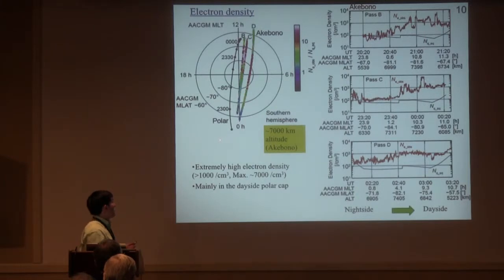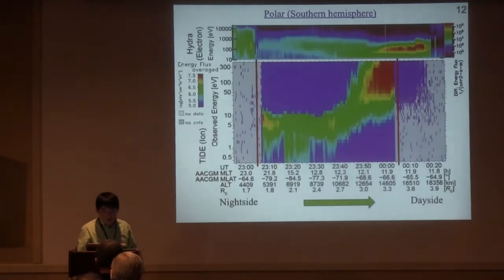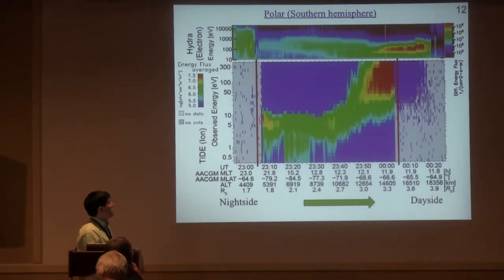At the same time, the Polar satellite crossed the polar cap near the Akebon satellite path. Next, we show this observation. The time period is near the peak of this magnetic storm. This is the electron data. This is the low energy ion data observed by the Polar satellite. In the polar cap, ions are mostly below 10 eV, and this peak corresponds to the oxygen ions based on the knowledge of E-cross-B drift velocity.